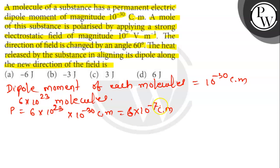So initial position potential energy Ui, initial potential energy Ui is equal to minus P E cos theta,